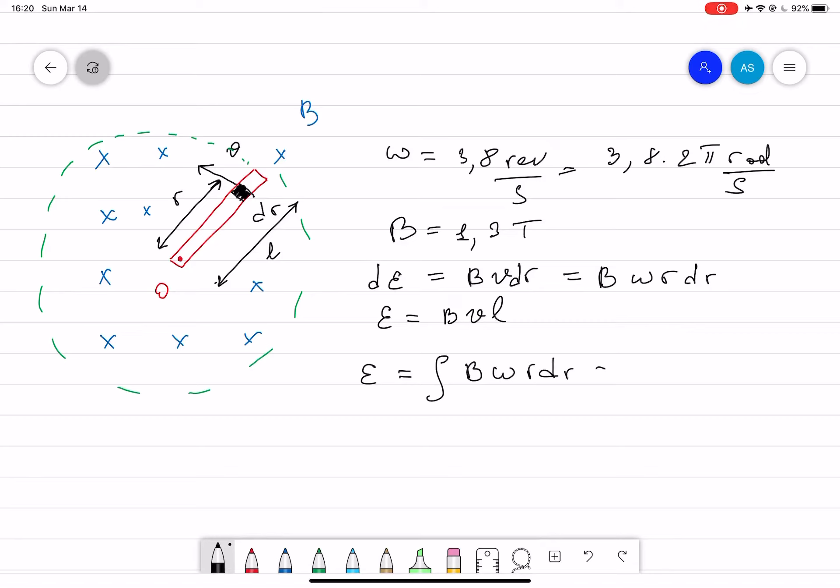If you put the limits from zero to l, that gives you the total EMF, which equals B omega l²/2.